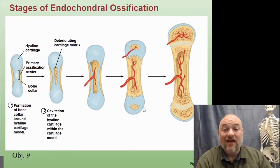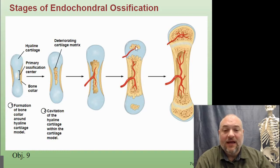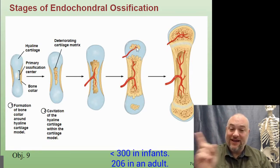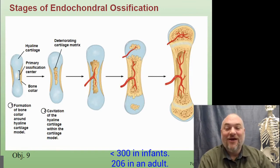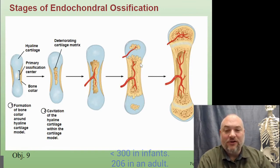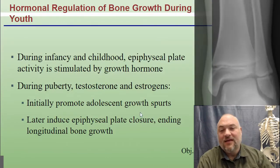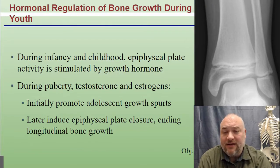This is why infants have more bones than adults. Adults have about 206 bones, while infants have close to 300. You can actually see multiple bones where adults have one fused bone.